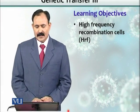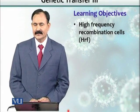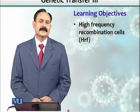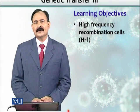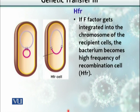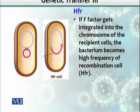The learning objective covers high-frequency recombination cells. This is another phenomenon or subtype of conjugation where F-factor-bearing cells — this is a plasmid we call the fertility factor — sometimes get integrated into the chromosomal DNA of the bacteria. Once it gets integrated into the chromosome of the bacterium, this cell is called a high-frequency recombination cell.